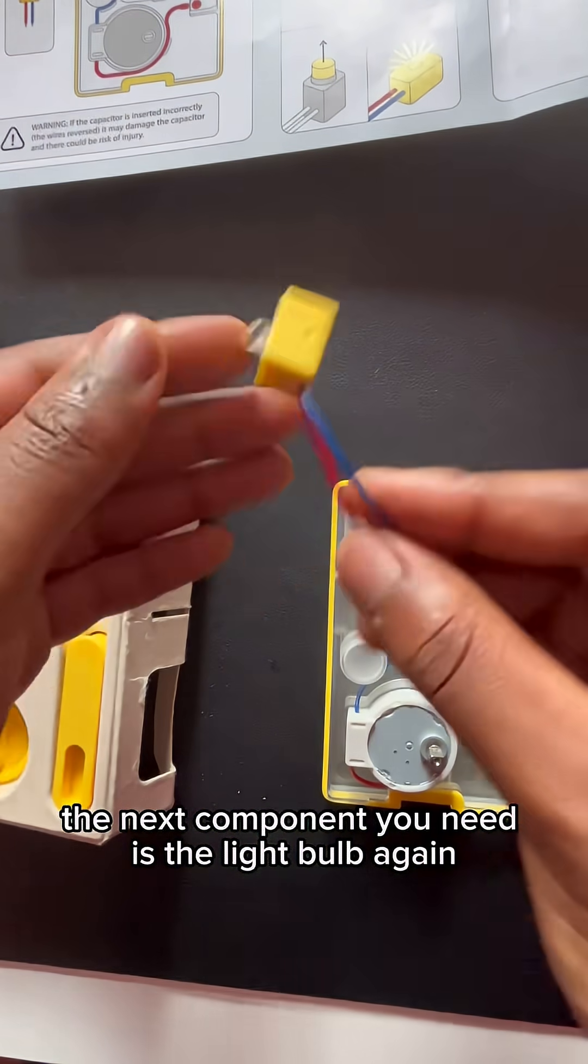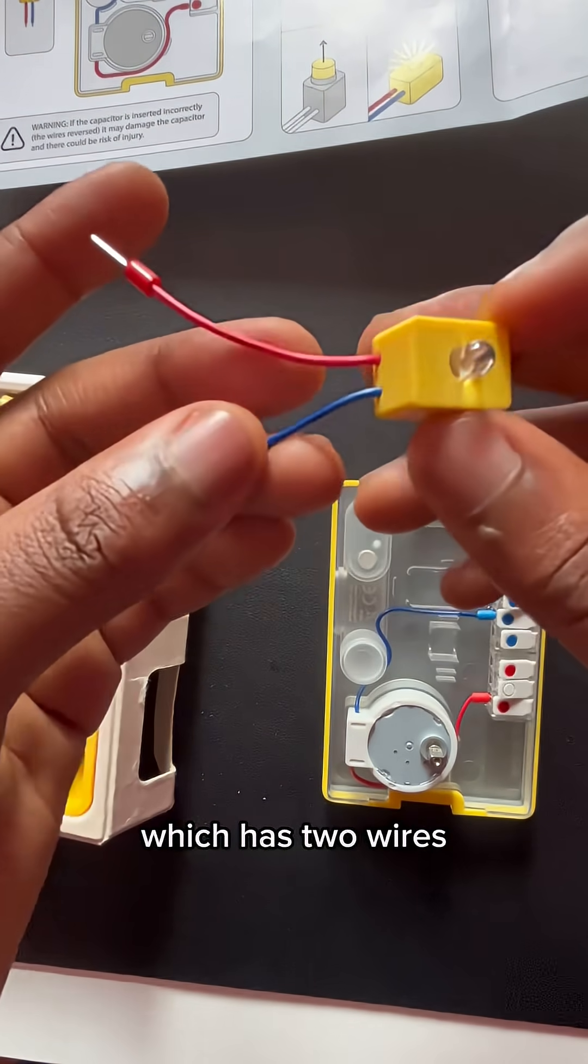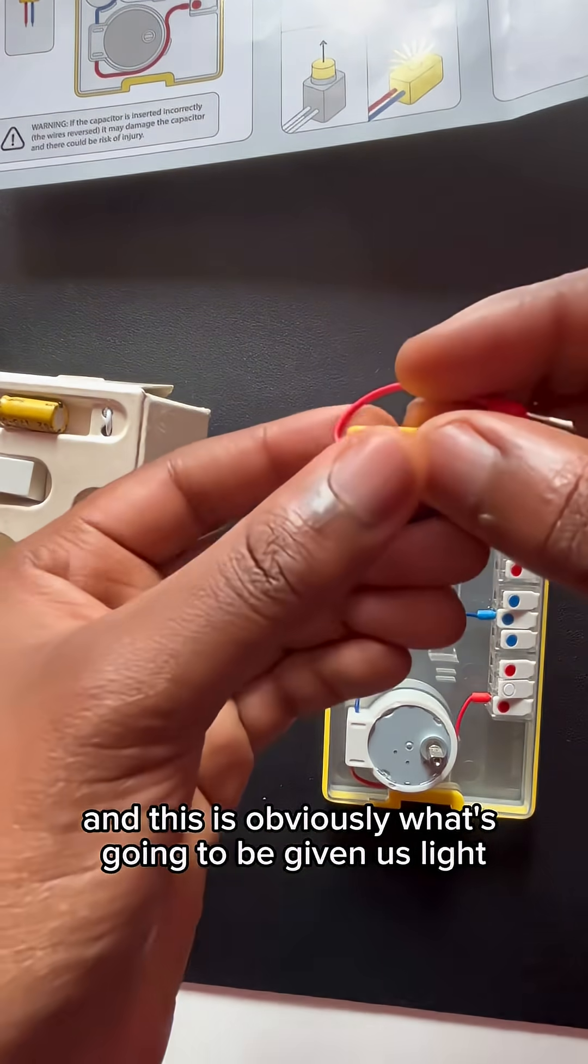The next component you need is the light bulb again which has two wires and this is obviously what's going to be giving us light.